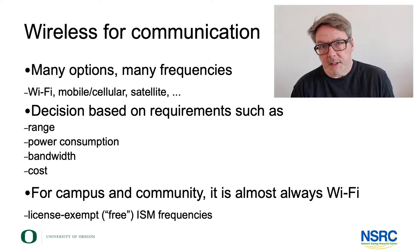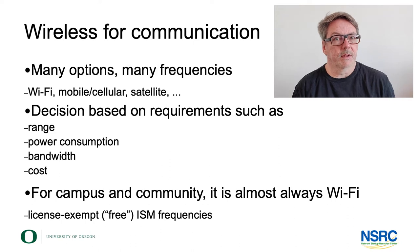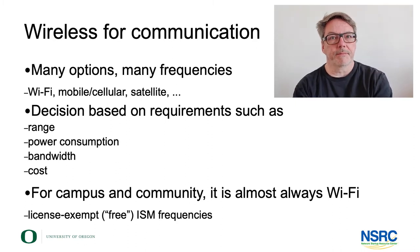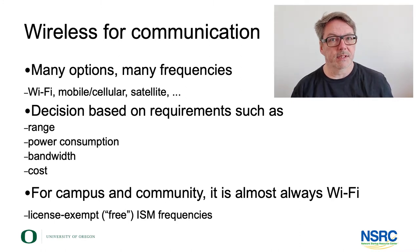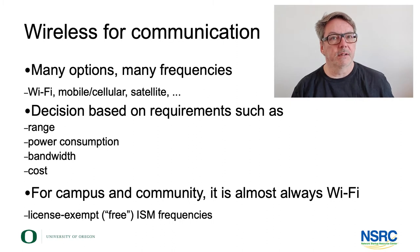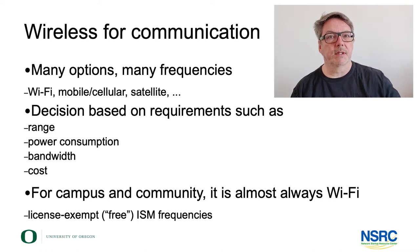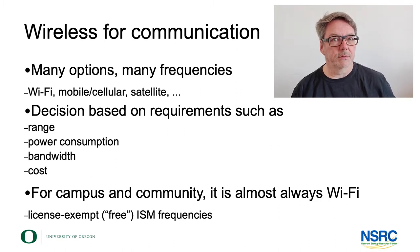For community networks and campus networks, most of the time wi-fi will be our choice. One very important reason is spectrum considerations. Wi-fi uses what are called ISM frequencies — Industrial, Scientific, and Medical. These are frequencies that are free to use in most places on this planet. They are license-exempt, meaning you don't have to apply for or buy a license.